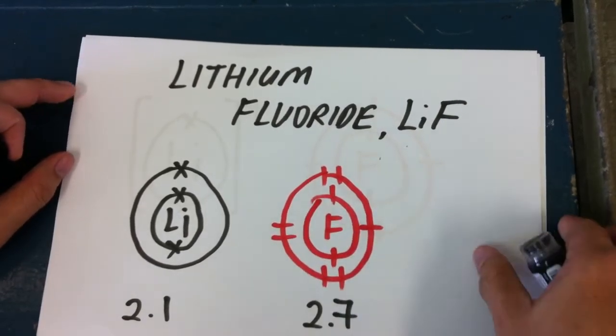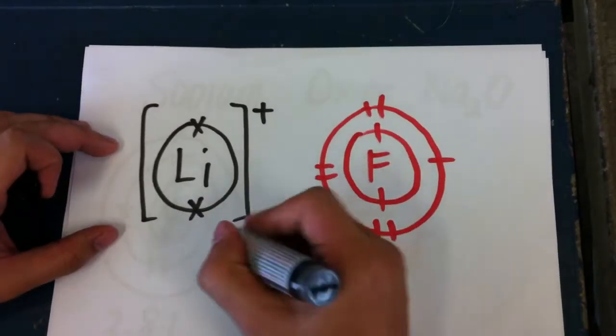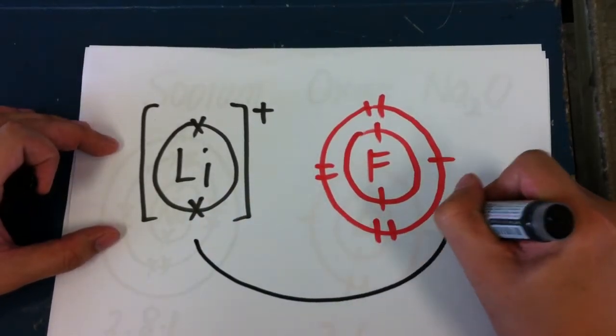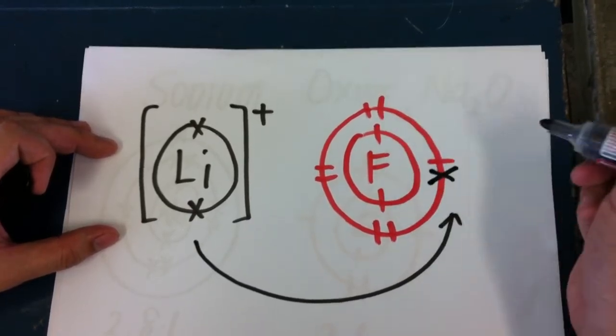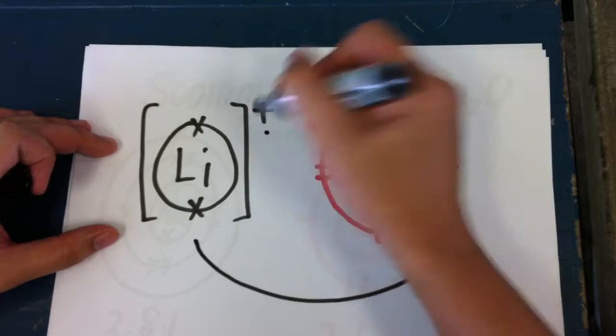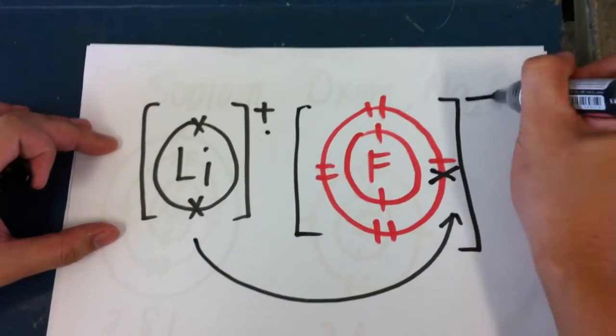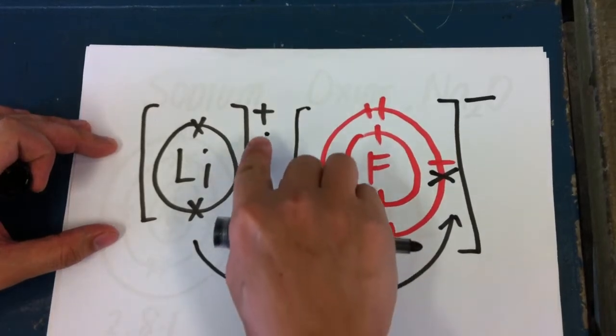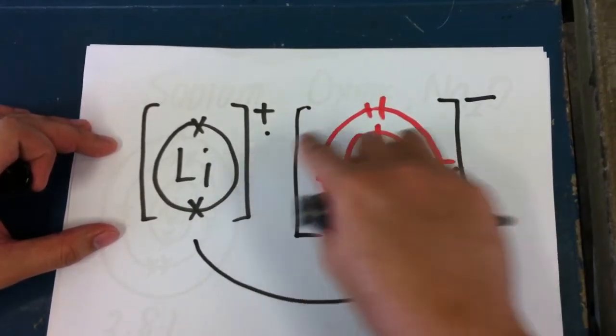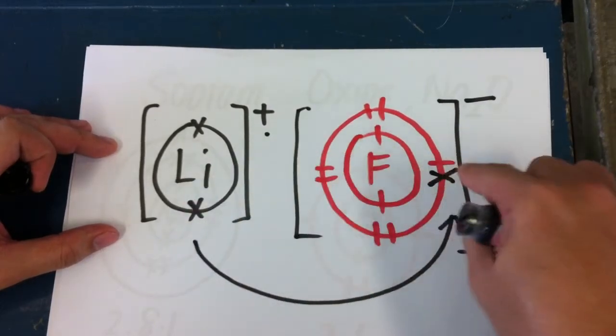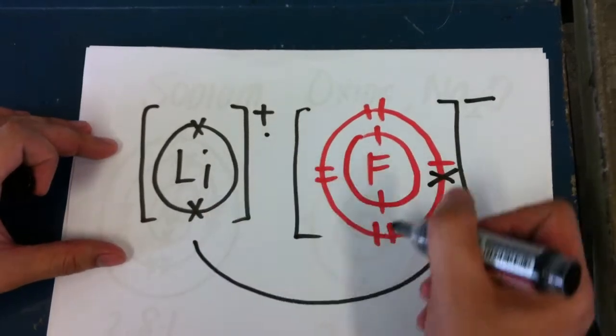In this case, lithium originally was 2.1 - it gives away one electron. Fluorine needs one more to get a stable noble gas structure. Since lithium gives away, it forms a positive, and fluorine will form a negative. Now you have positive and negative ions - there's an attraction. Positive is attracted to negative, so what you have is a covalent bond between two different ions, and both of them now have a stable noble gas structure.